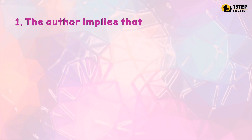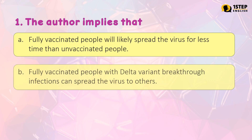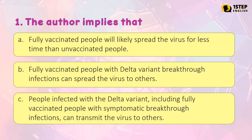Number 1: the author implies that — Letter A: fully vaccinated people will likely spread the virus for less time than unvaccinated people. Letter B: fully vaccinated people with Delta Variant breakthrough infections can spread the virus to others. Letter C: people infected with the Delta Variant, including fully vaccinated people with symptomatic breakthrough infections, can transmit the virus to others. The correct answer is Letter A: fully vaccinated people will likely spread the virus for less time than unvaccinated people.